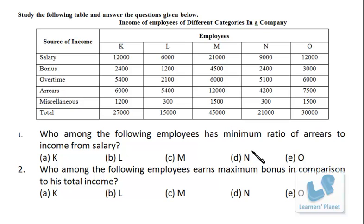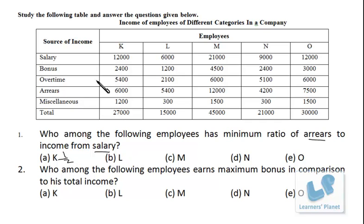Who among the following employees has the minimum ratio of arrears to income from salary? For K, income from salary is 12,000 and arrears is 6,000, so the ratio is 6,000 by 12,000 = 1 by 2. For L, it is 5,400 by 6,000, which simplifies to 54 by 60, or 9 by 10.